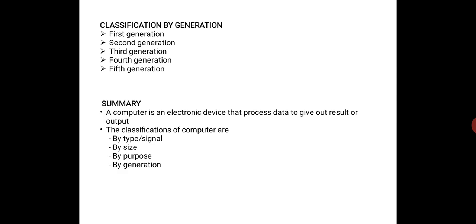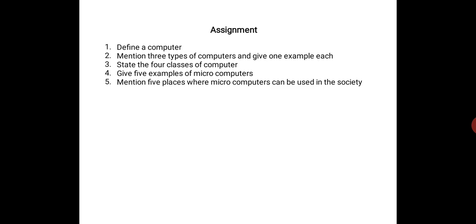Assignments: 1. Define a computer. 2. Mention three types of computers and give one example of each. 3. State the four classes of computer. 4. Give five examples of microcomputers. 5. Mention five places where microcomputers can be used in society. Thank you for listening.